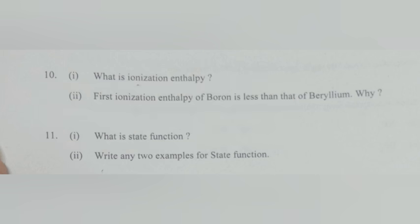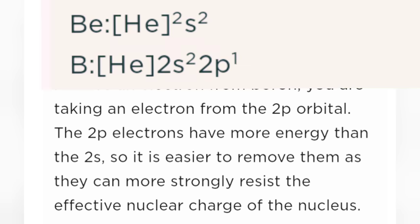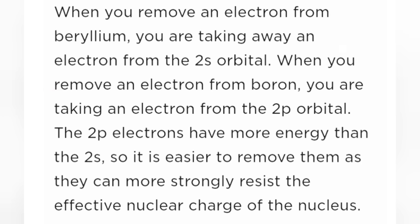Part 2: First ionization enthalpy of boron is less than that of beryllium. Why? Answer: Boron has only one electron in p-subshell. When you remove an electron from beryllium, you are taking away an electron from the 2s orbital. When you remove an electron from boron, you are taking an electron from the 2p orbital. The 2p electrons have more energy than the 2s, so it is easier to remove them.